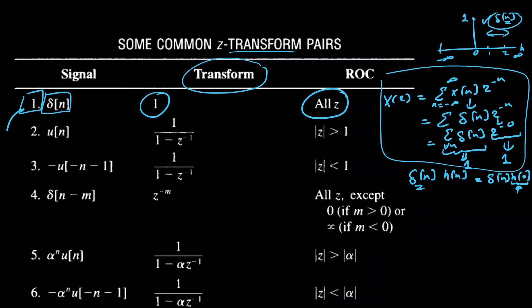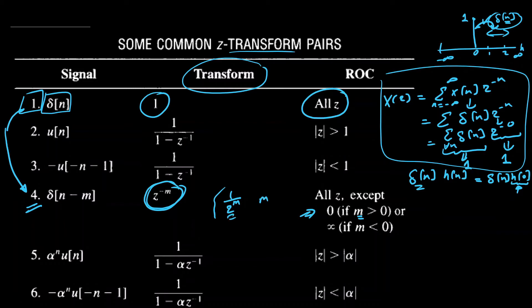From pair one we can easily derive the transform of delta(n minus m). This is simply shifted to the m-th instant, giving Z^(-m). However, for the region of convergence it is important to know whether m is positive or negative. For positive values of m this has the form Z^(-m), and for this to converge m cannot be zero.